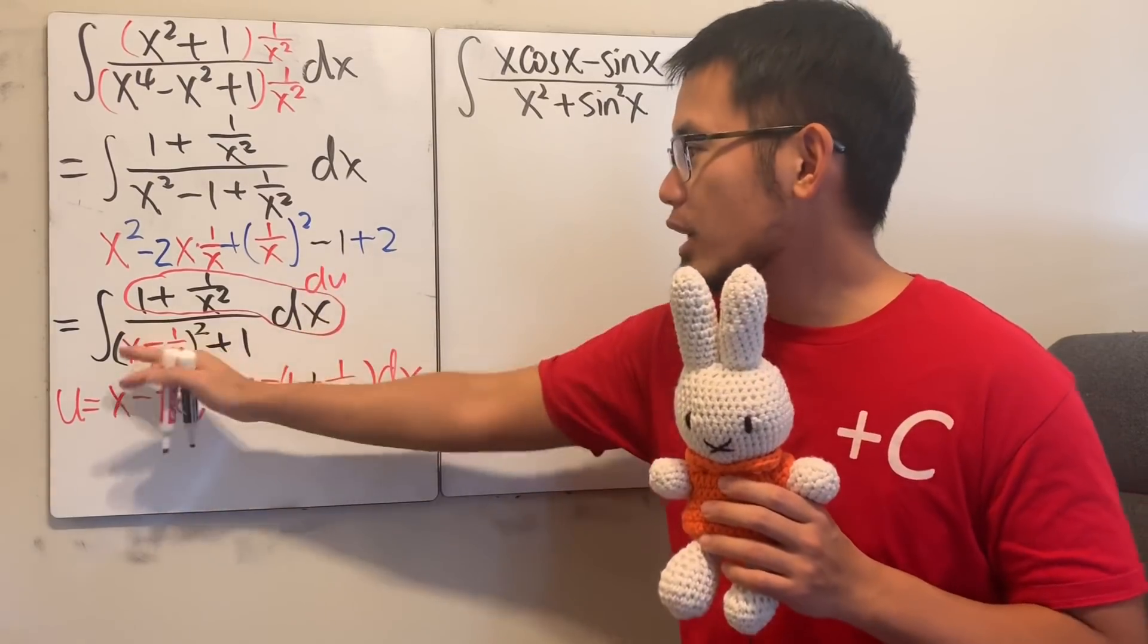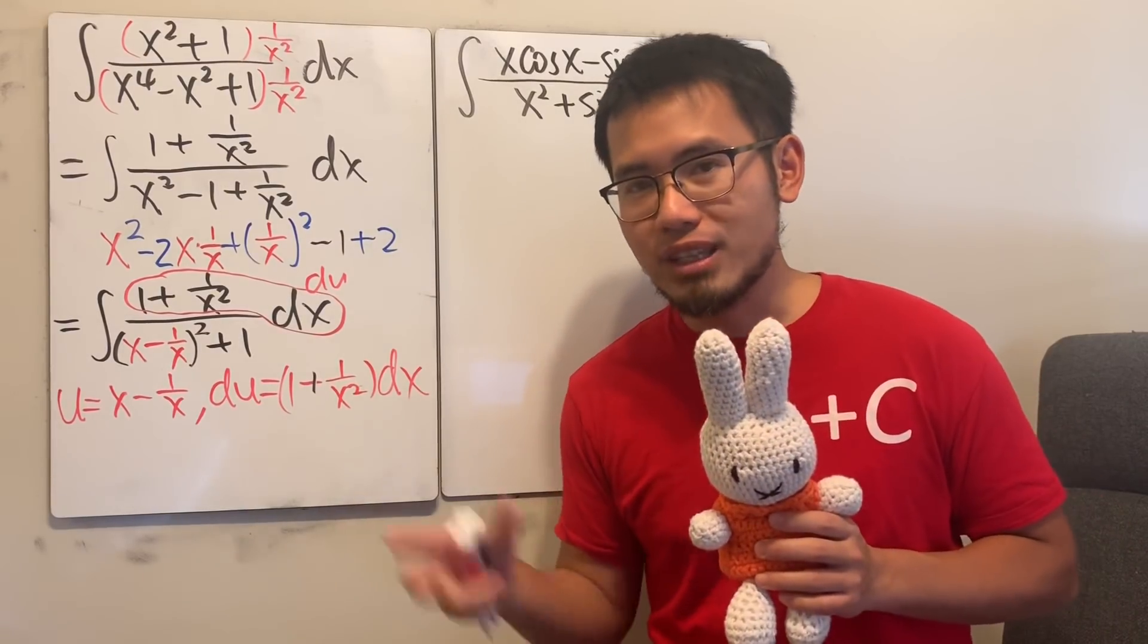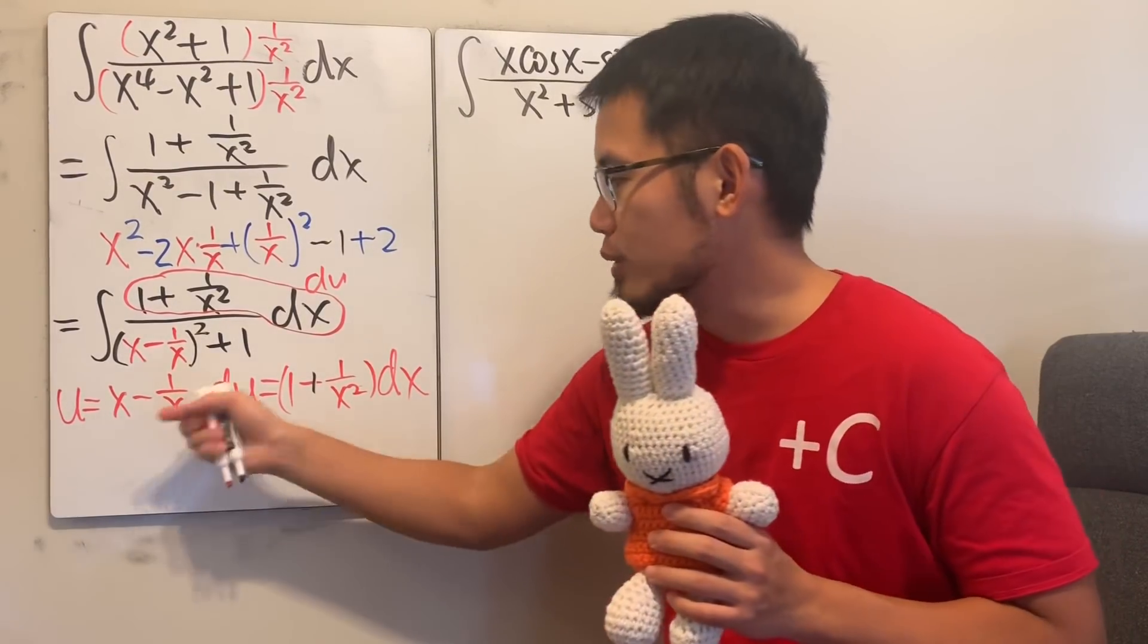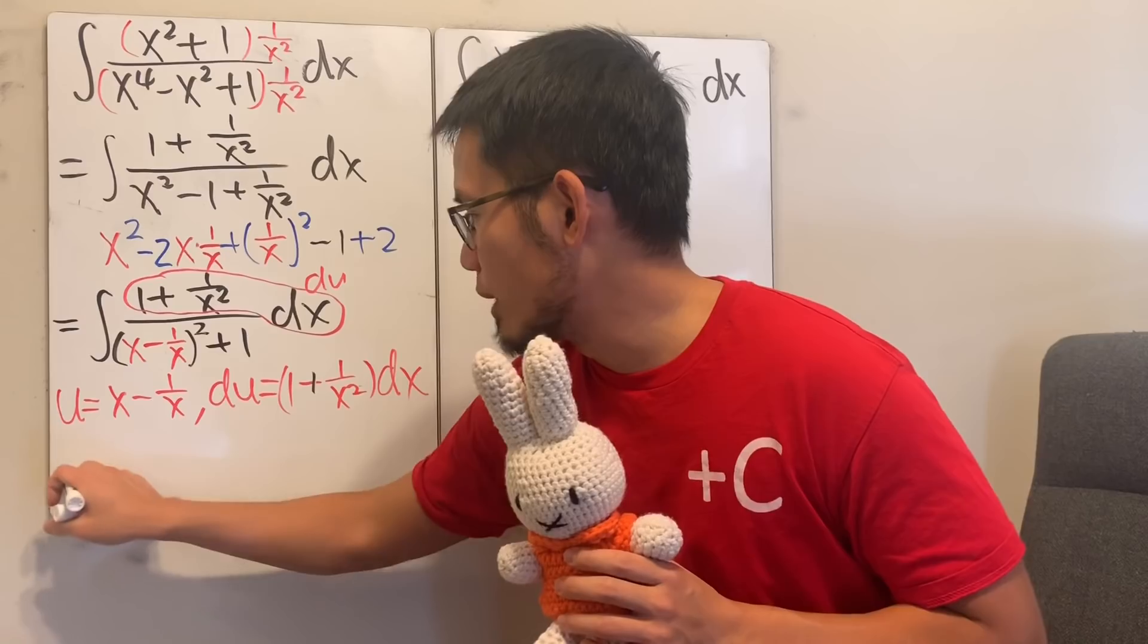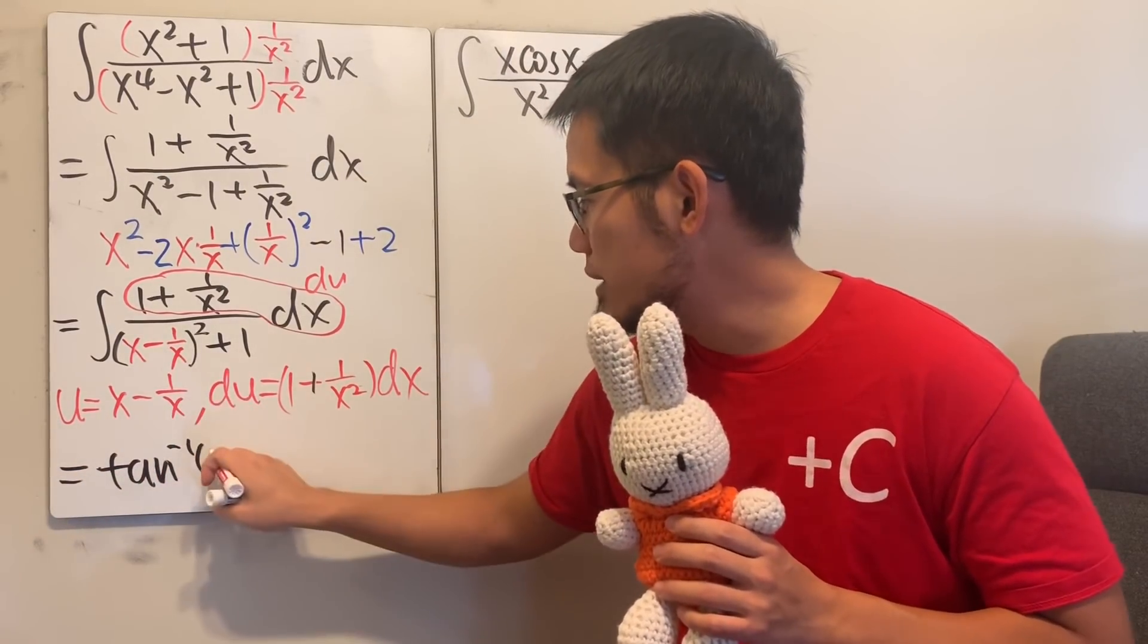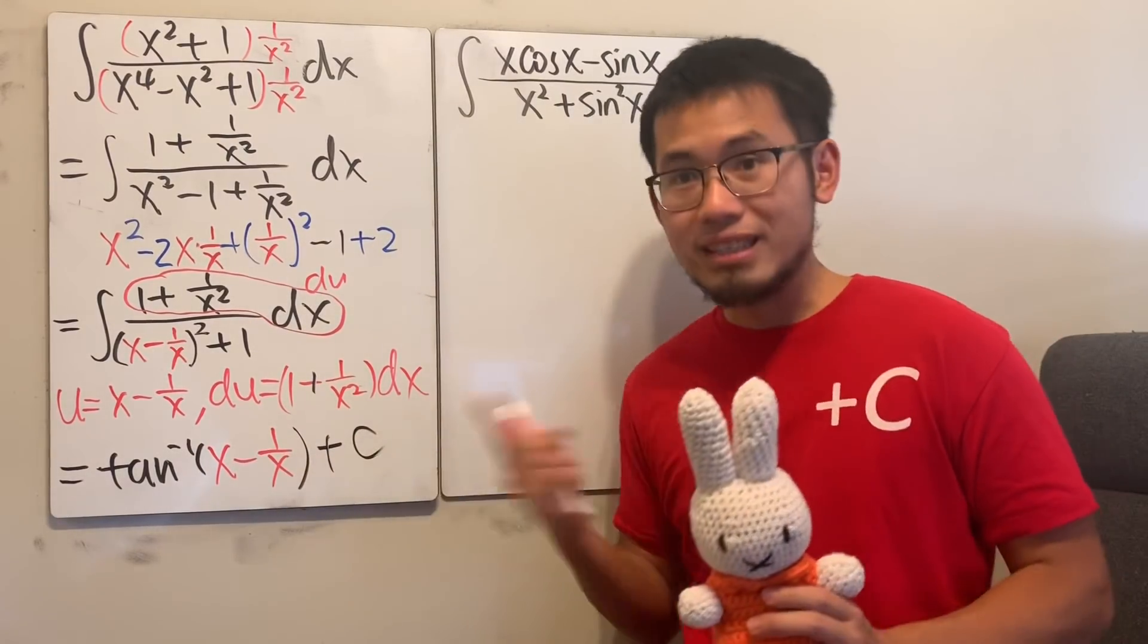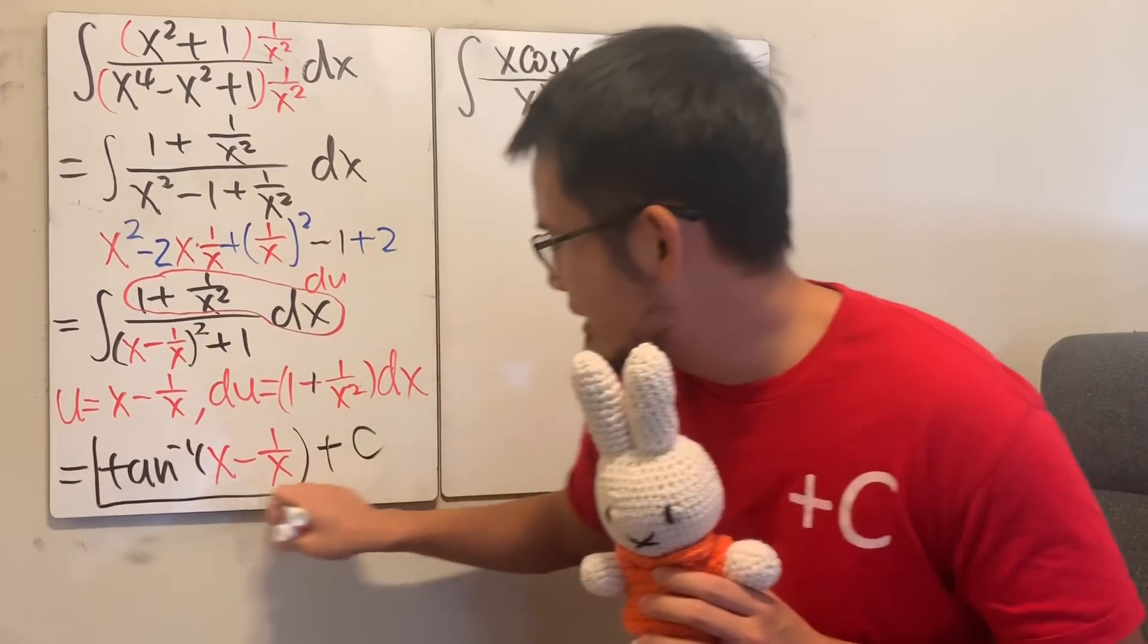So, this right here is just integrating 1 over u squared plus 1 in the u world. And the answer for that is just the inverse tangent of u. And we know u is that. So, we are done actually. I'll just write down the final answer. Inverse tangent of u, which is x minus 1 over x. And then we're all done. So, don't forget the plus c. So, this is it.